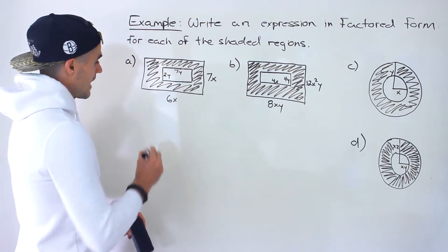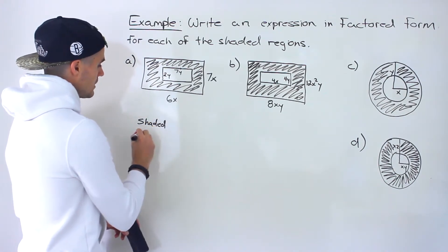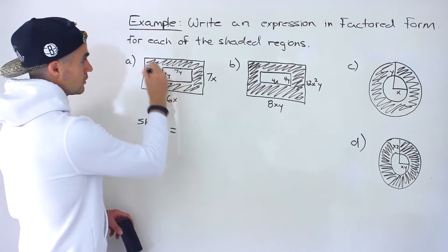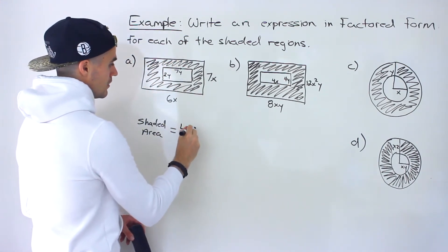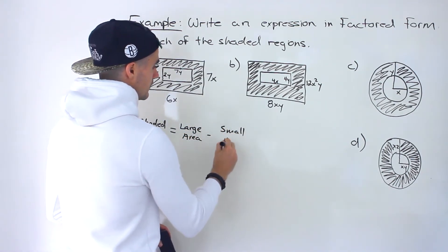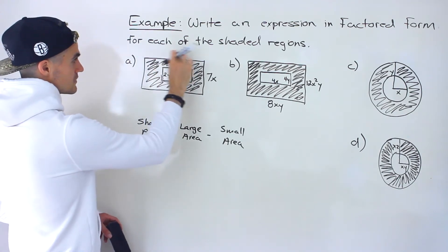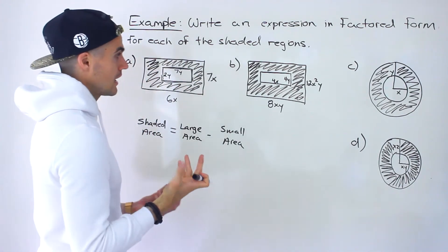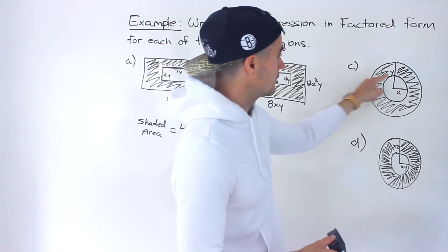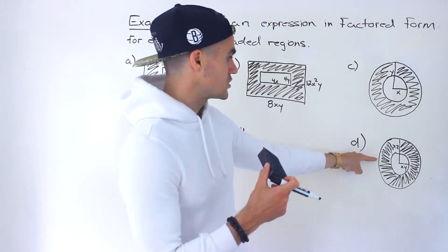In this case — and actually in all of these cases — the shaded area is going to equal the large area minus the small area. So it's all of it shaded minus this area over here, and their difference gives us the shaded area. That same pattern applies to all of these, including the circles where we have a large circle minus a smaller circle.